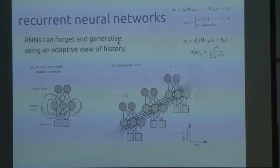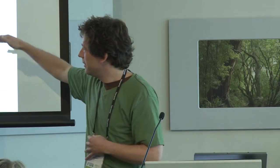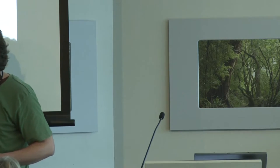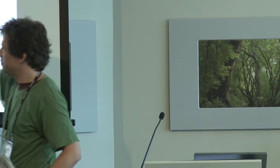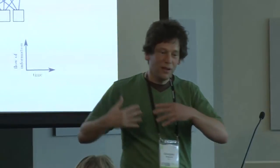A recurrent neural network is a neural network where the previous generation's hidden state is passed on to the new state. The input says what letter turned up, the grey circles are the hidden state, and the pink ones are the output. It just remembers as far back as it needs to in order to make a prediction for the next character. It's by far the best way of modelling language at the moment.